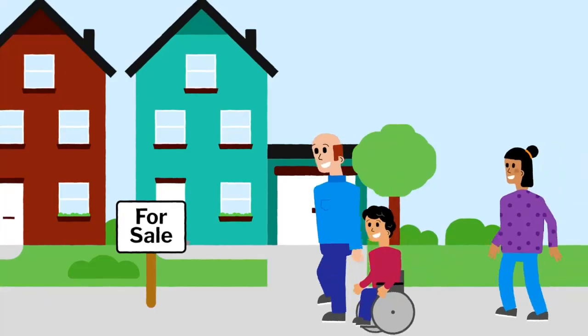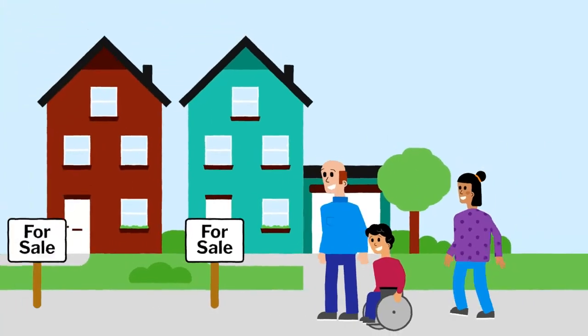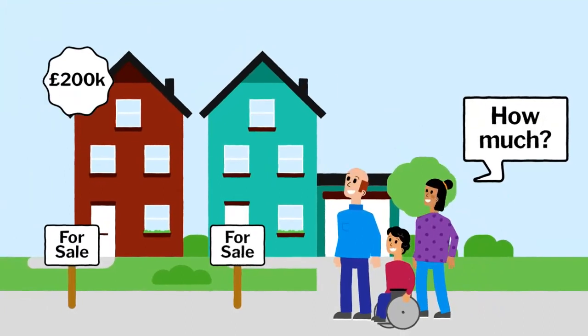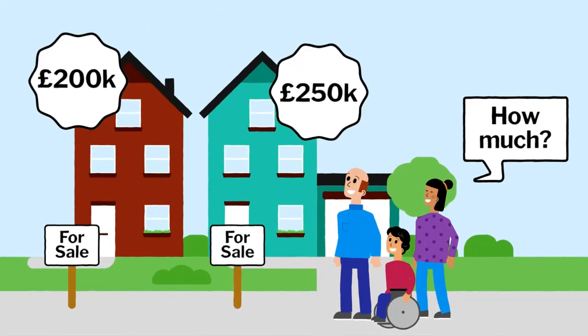Bias in the context of machine learning isn't to do with opinions. It is a measure that shows how far away the average predictions are from the actual data labels. Imagine you wanted a machine learning algorithm that will predict the price of a house in a certain area based on its size.